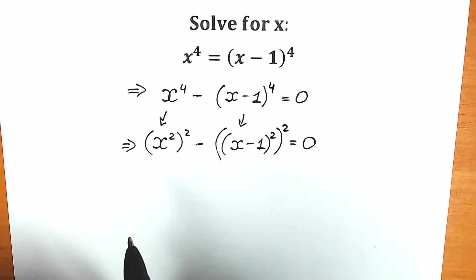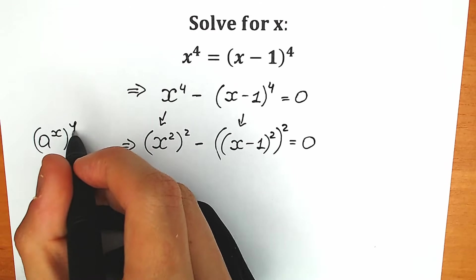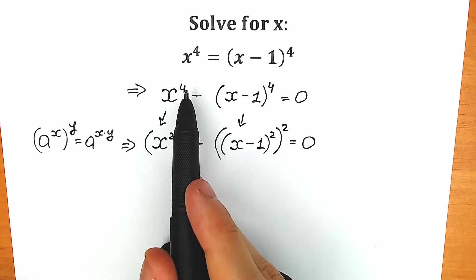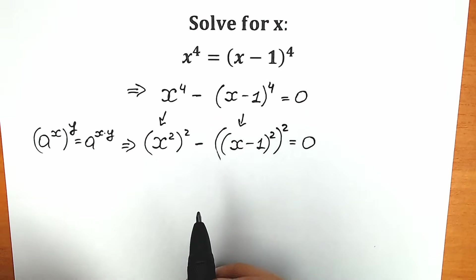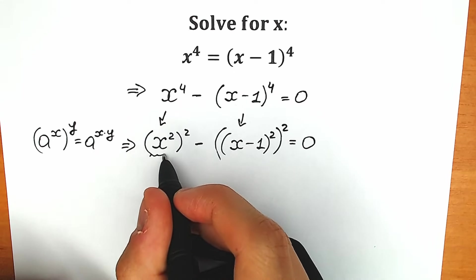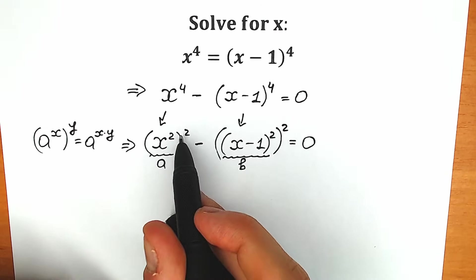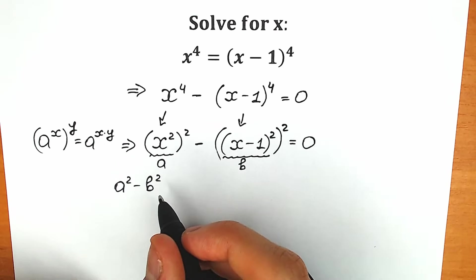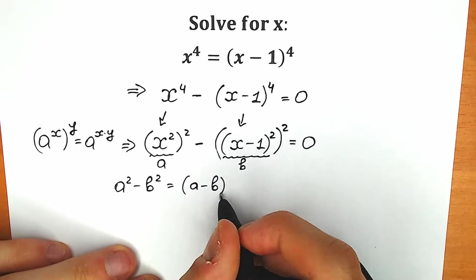According to the basic power rule, when we have a to the power x raised to the power y, we multiply: a to the power x times y. So two times two gives us the same four on both sides. But if you look at this from another perspective, we have the difference of squares — a squared minus b squared, the most well-known formula in algebra.